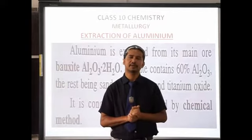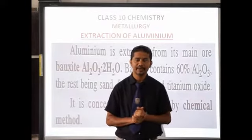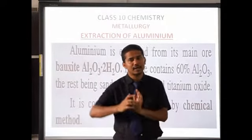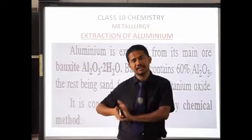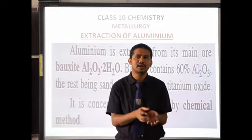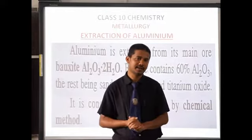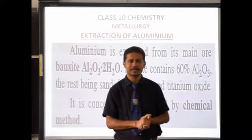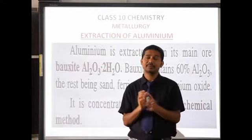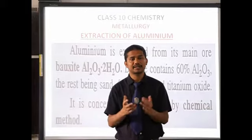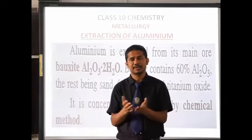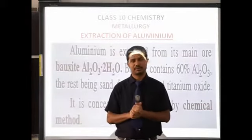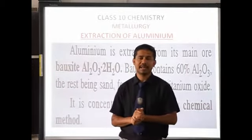The main ore of aluminium is bauxite. Bauxite is not found in pure form — it is associated with some impurities called gangue or matrix. After getting the ore, we crush it into fine powder.